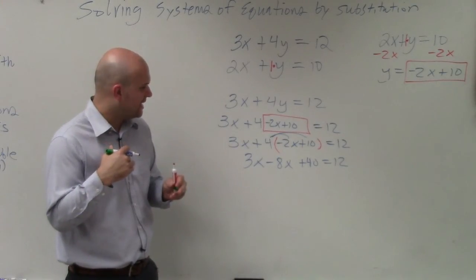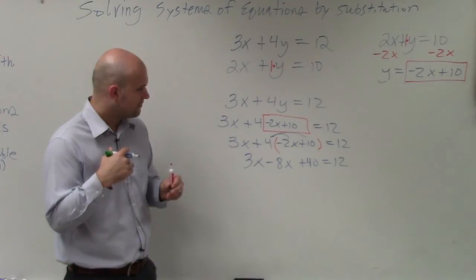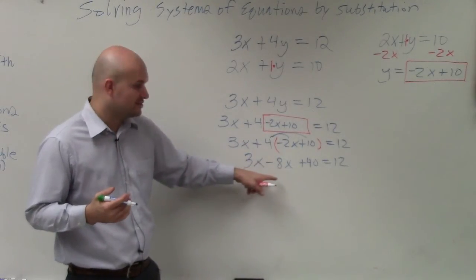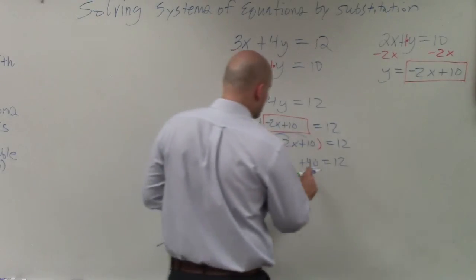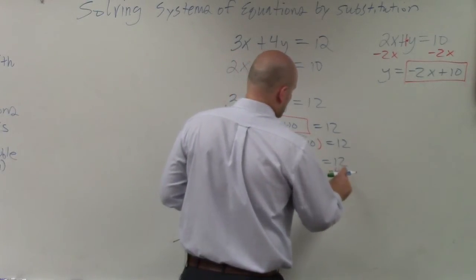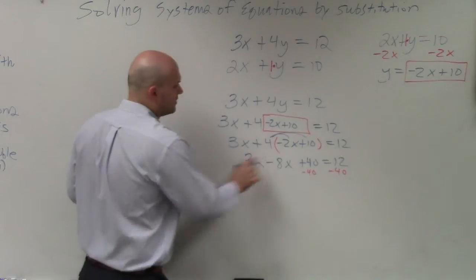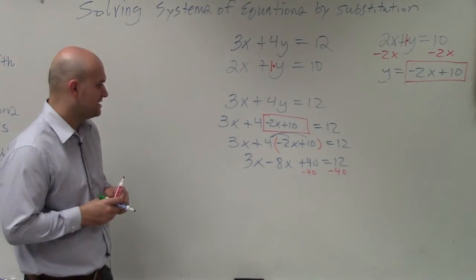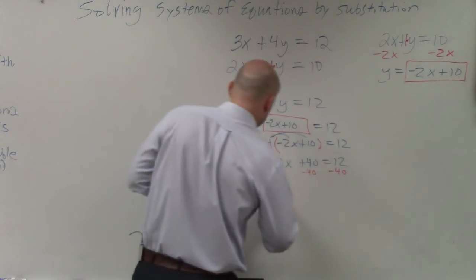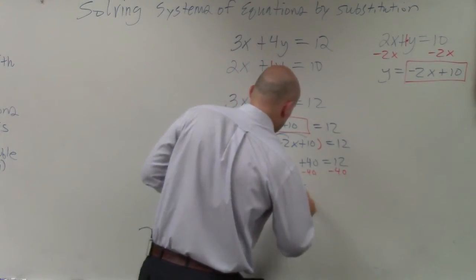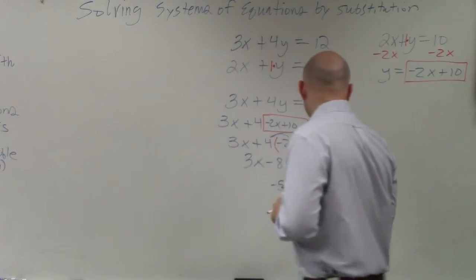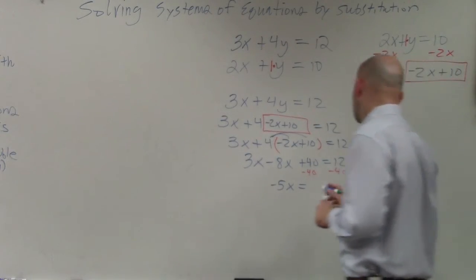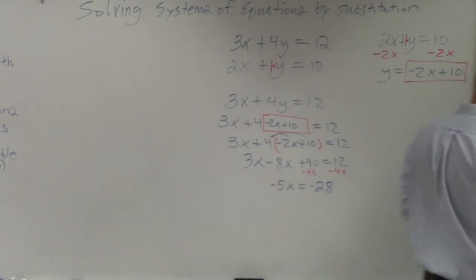Now, we want to make sure that we go ahead and solve, combine like terms, and solve. So first thing we do is going to subtract the 40 on both sides. And then I'll combine these. 3x minus 8x is going to give me a negative 5x. Equals. This becomes a negative 28. It's just a negative 28, right?